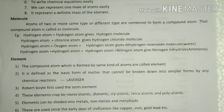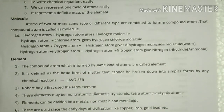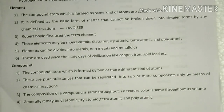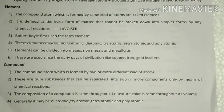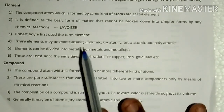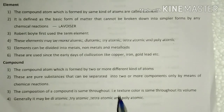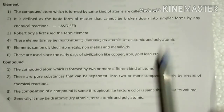Now, coming to the definition of element and compound. An element is also a compound atom, and a compound is also a compound atom, but the difference is: an element is formed by the same kind of atoms, whereas compounds are formed by different kinds of atoms. Hydrogen atom and hydrogen atom gives hydrogen molecule — that is an example of an element. The compound atom formed by the same kind of atoms is called an element. An element is defined as the basic form of matter.